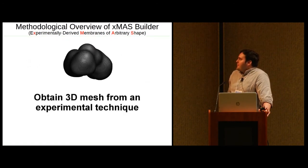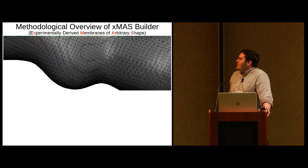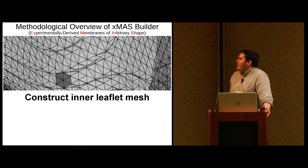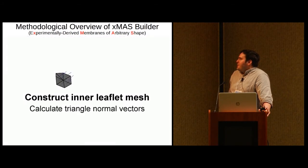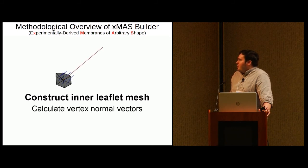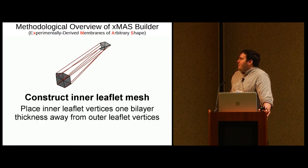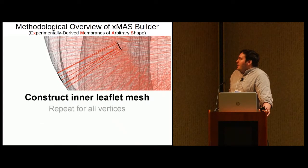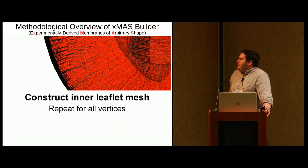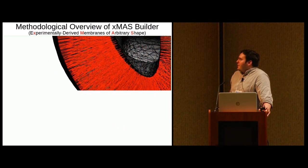So the first step in XMIS Builder is to obtain a 3D mesh from an experimental technique. Using this mesh, you can generate an inner leaflet mesh, which you can do first by measuring the triangle normal vectors, which we use to calculate the vertex normal vectors, which can be used to place the inner leaflet mesh vertices one bilayer thickness away from the outer leaflet mesh vertices. This can be repeated for all vertices, at which point you have an inner leaflet mesh.